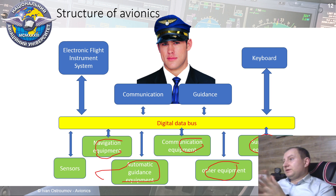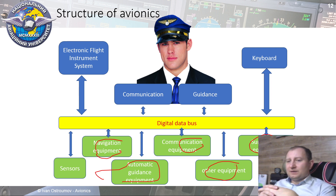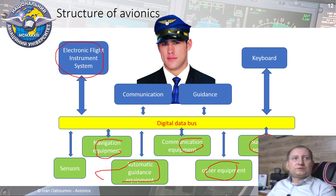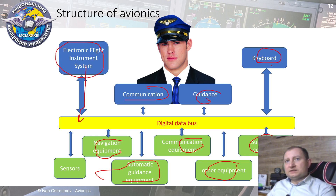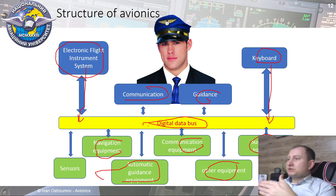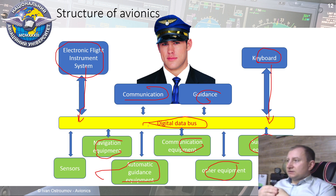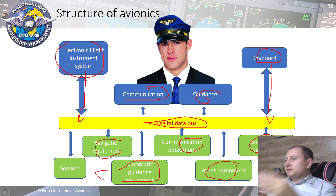In the cockpit — just like a PC — we have only monitors or displays, keyboards, and some input/output devices. In the cockpit we have the Electronic Flight Instrument System, which is also connected to the digital data bus. We have communication, guidance, and input/output devices, as well as components for interrogating particular units or components of avionics via the digital data bus. The digital data bus is a network on board of aircraft that supports data traveling between input/output devices, displays, and systems anywhere on board.